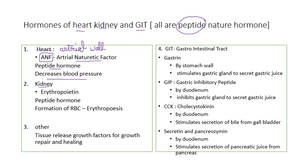The kidney releases a peptide hormone called erythropoietin, which is responsible for the formation of RBCs (erythropoiesis). Apart from that, body tissues release certain protein-nature growth factors that help in repair and healing procedures wherever needed in the body.